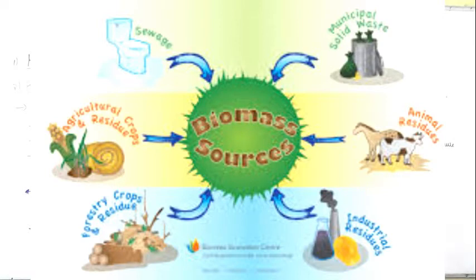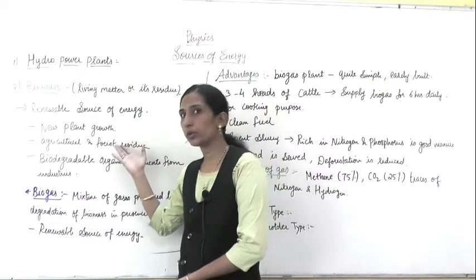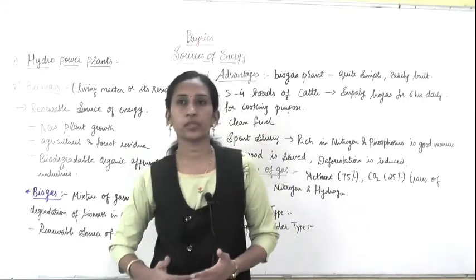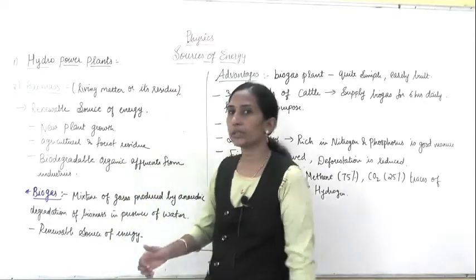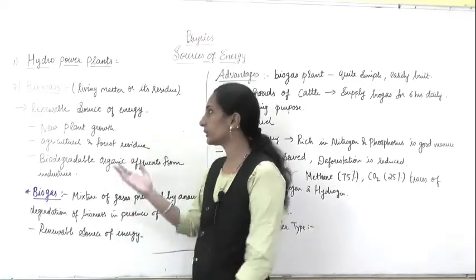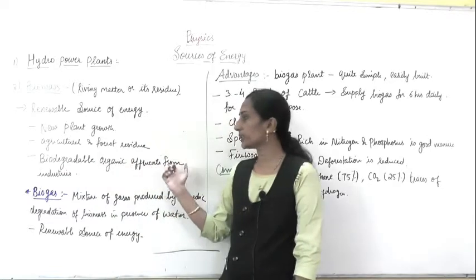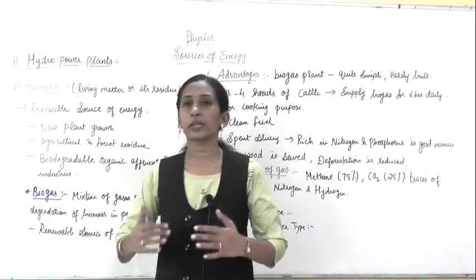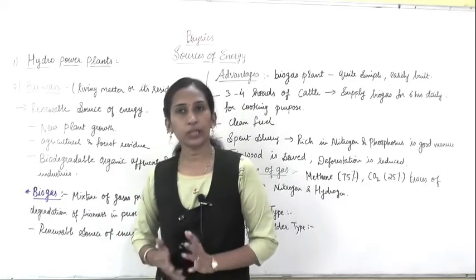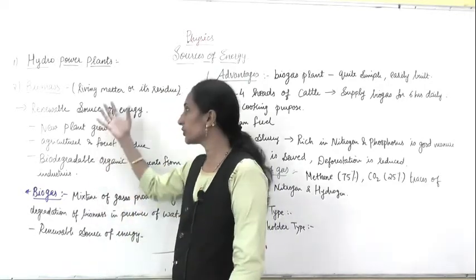The sources from which you get biomass include: new plant growth, agricultural and forest residues — the remaining matter from agriculture and forests — and biodegradable organic effluents from industries. From industries also there are some wastes or effluents that are biodegradable and organic, so all these constituents can be used for the biogas plant.